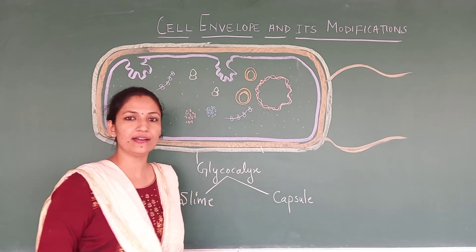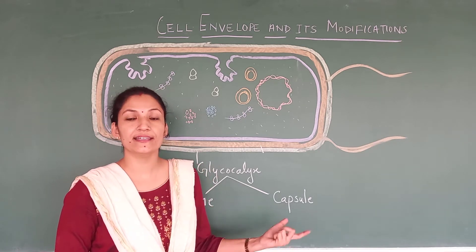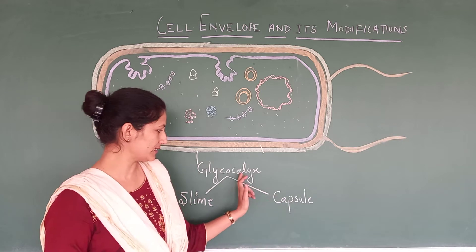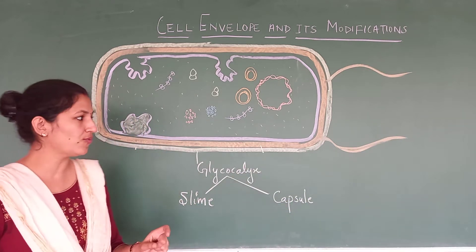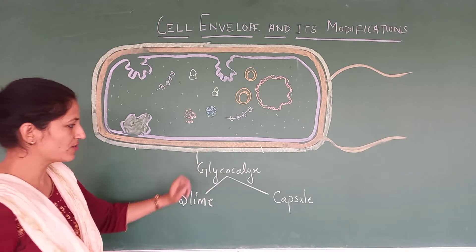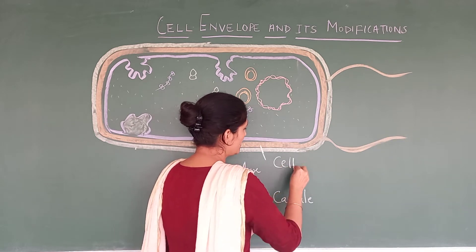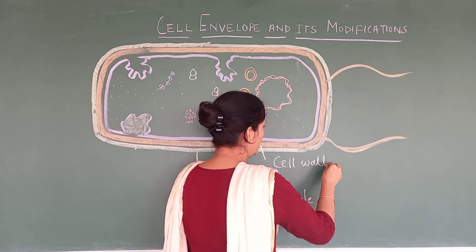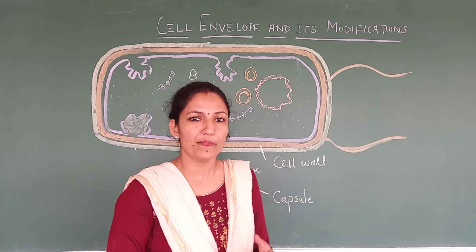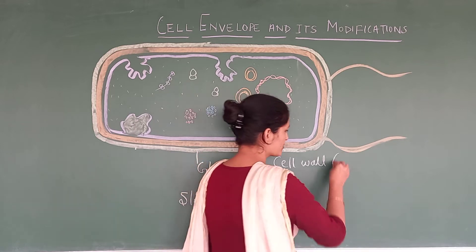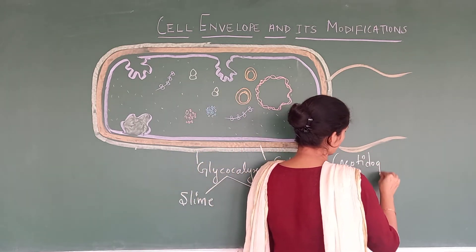You might have read under the Monera kingdom that bacteria have a capsule. So this is that capsule — the hard covering outside the cell wall. Inner to the glycocalyx, this orange colored one, is the cell wall. In the case of bacteria, the cell wall is made up of peptidoglycans.